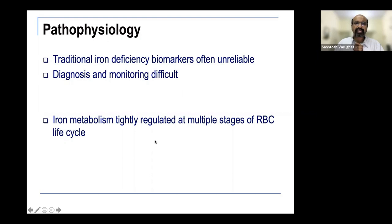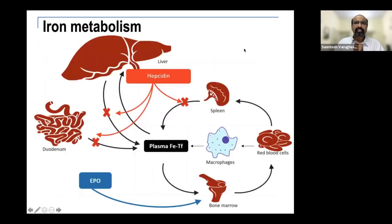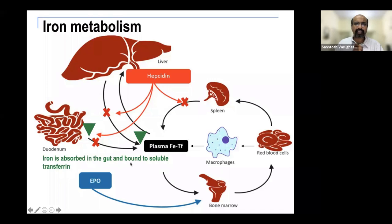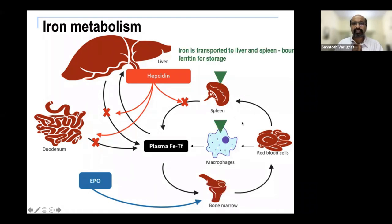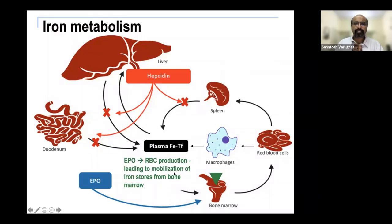It's important to remember that iron metabolism is tightly regulated at multiple stages of the RBC life cycle. The iron we ingest in our diet is absorbed in the gut and bound to soluble transferrin — follow the green boxes — then it goes into circulation, is used for erythropoiesis, and is stored in the bone marrow. Iron bound to transferrin also moves to the liver and spleen, where it is bound to ferritin for storage.